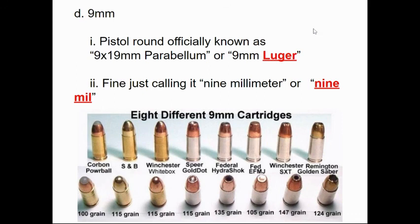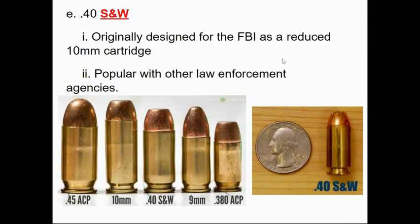A 9mm is officially called a 9x19mm Parabellum or 9mm Luger. There are eight different examples of 9mm cartridges shown — all 9mm in diameter but different types: some are hollow point, one is a soft point, maybe full metal jacket. Other names include manufacturer names such as Remington, Winchester, or Federal. The grain measurement at the bottom has to do with measuring the gunpowder, which is beyond what we need for this course.